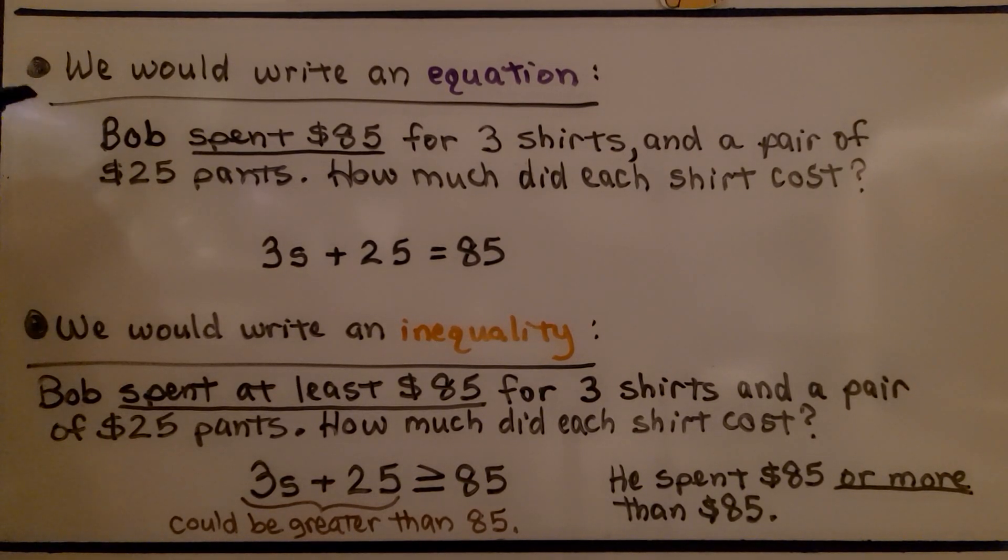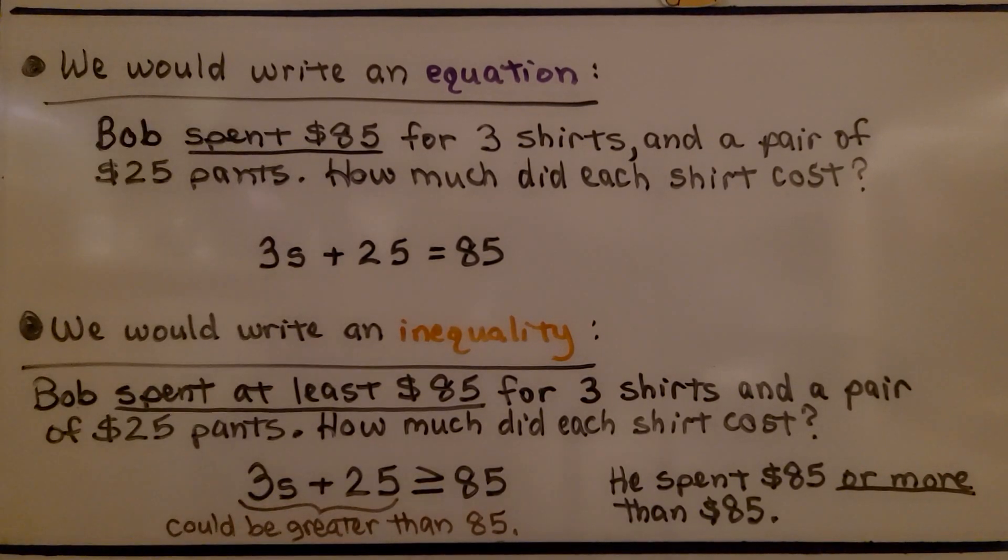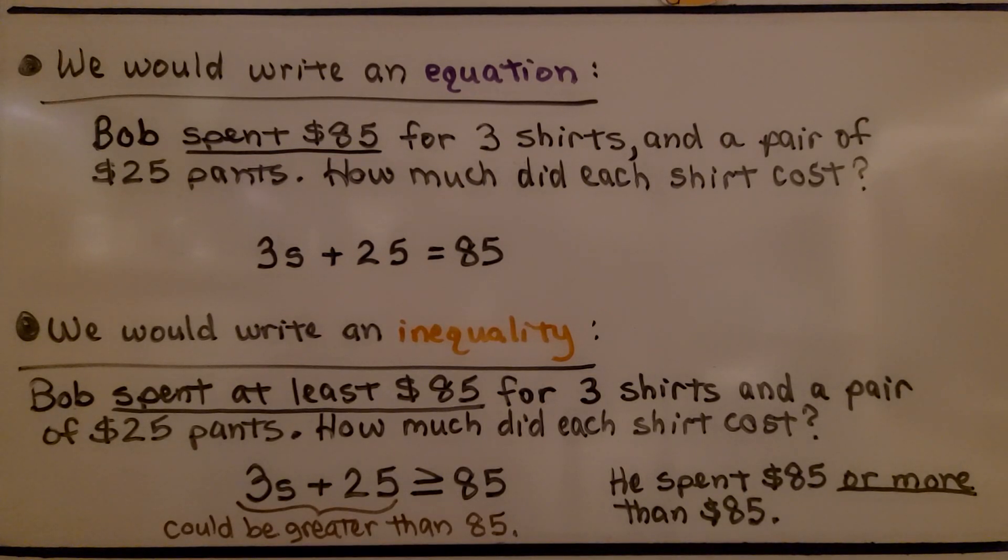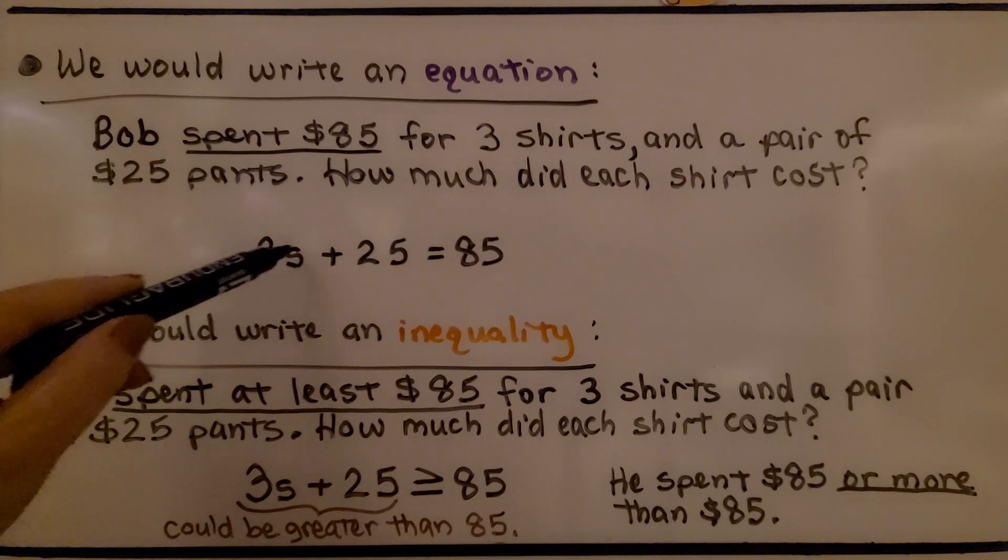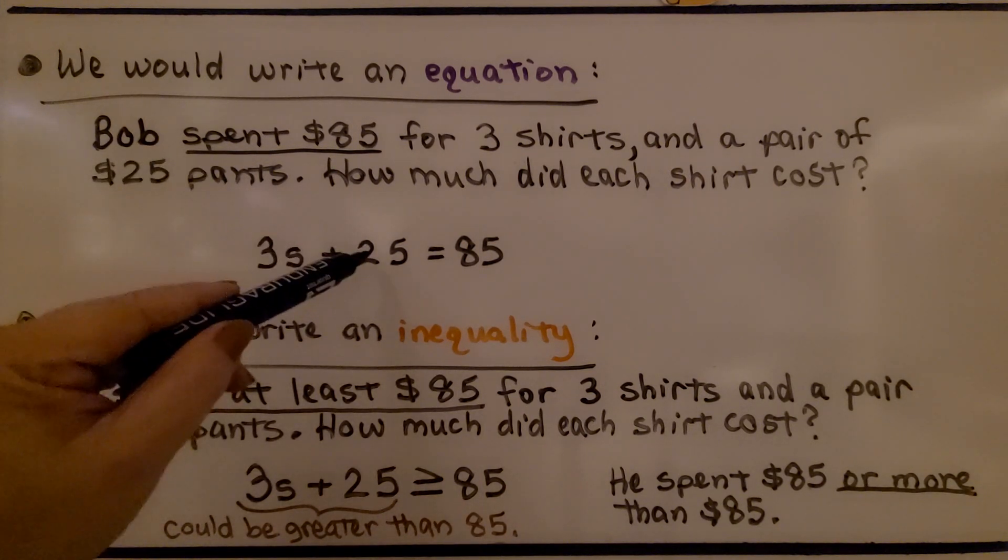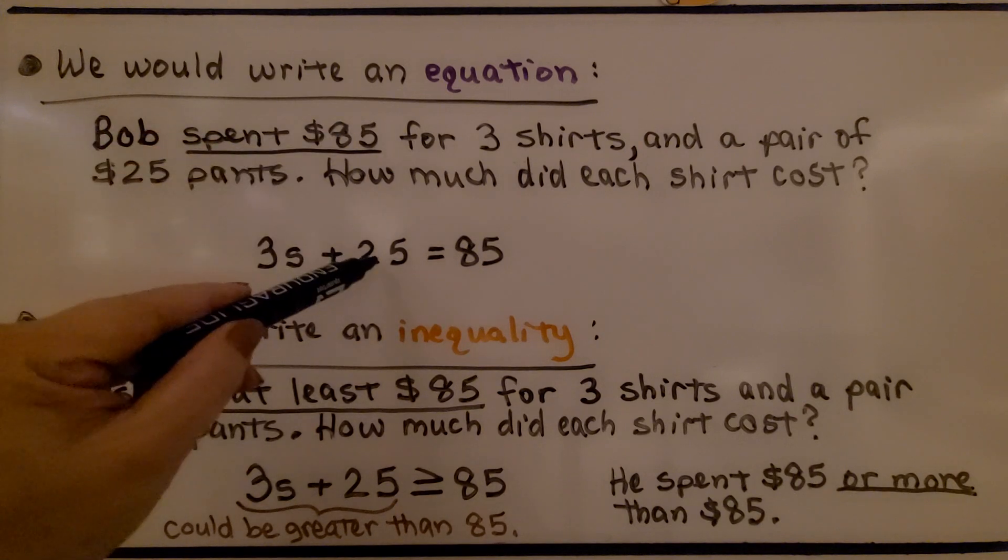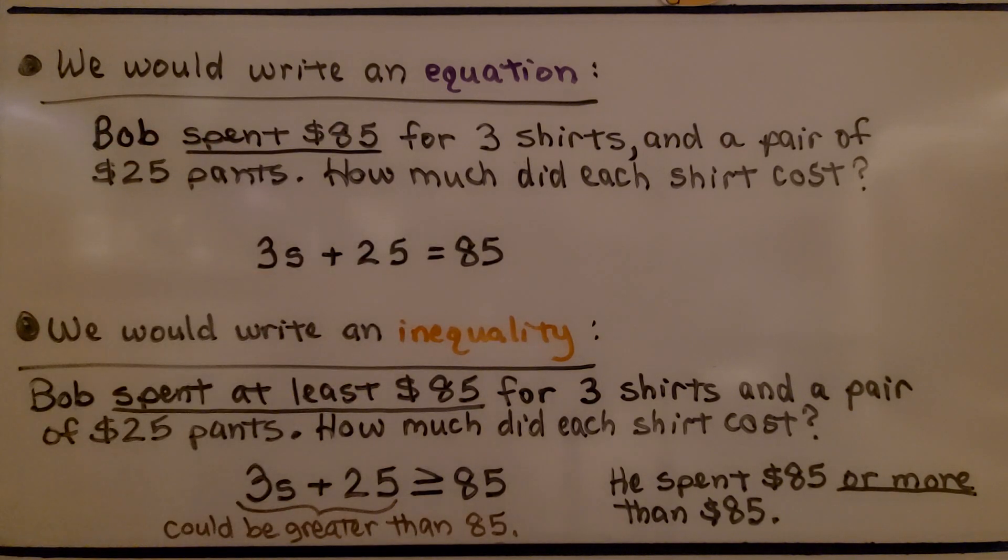This would be for writing an equation. Bob spent $85 for 3 shirts and a pair of $25 pants. How much did each shirt cost? We would do 3 times the shirt plus the $25 for the pants. And we know he spent $85, so it's equal to 85. This would be an inequality.